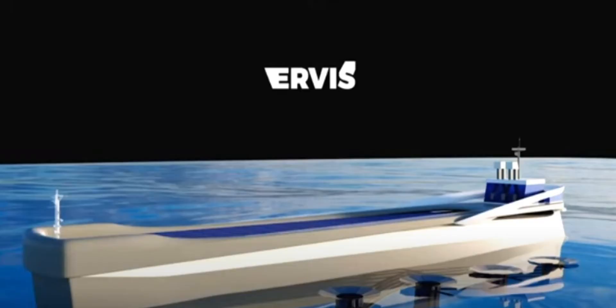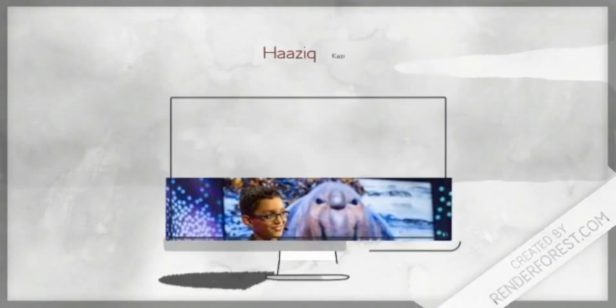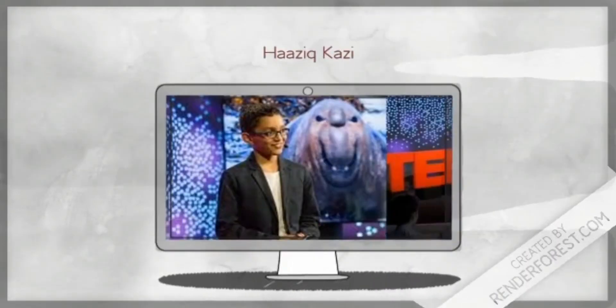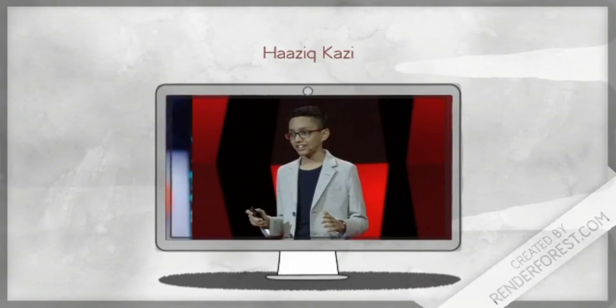That 12-year-old boy from Pune has designed a ship that will help clean up oceans and save marine life. His name is Haji Khaji, and he has named his invention Airways. He has presented his idea on international platforms like TEDx. Now I will explain how he got this idea.